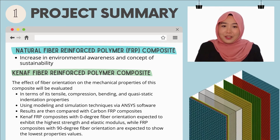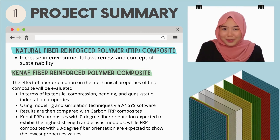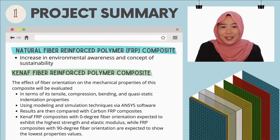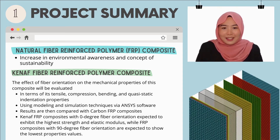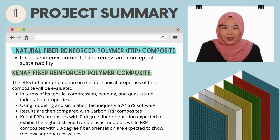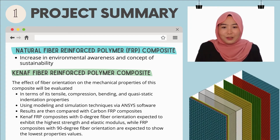In this study, natural fiber reinforced polymer composite, namely kernel fiber reinforced polymer composite, is chosen to be analyzed. The effect of fiber orientation on the mechanical properties of this composite will be evaluated in terms of its tensile, compression, bending, and quasi-static indentation properties using modeling and simulation techniques via NCS software. The results are then compared with those of synthetic fiber reinforced polymer composite made of carbon fiber, which is widely used in industry.